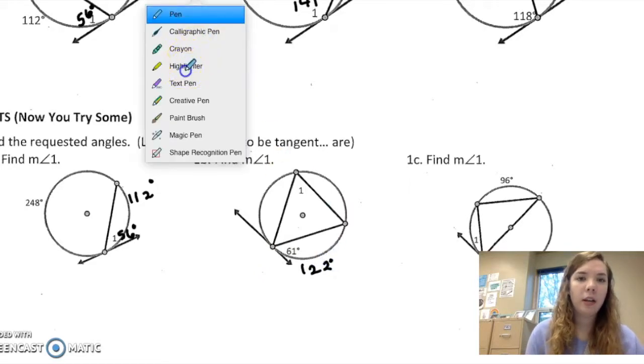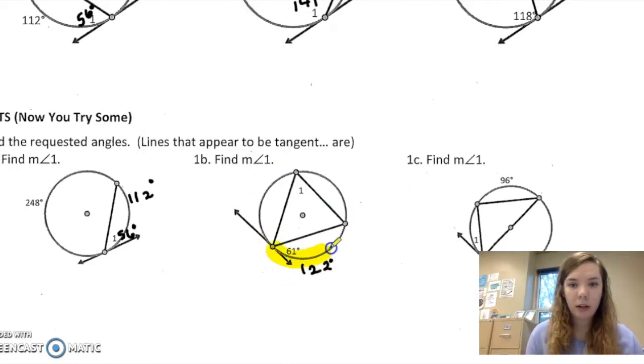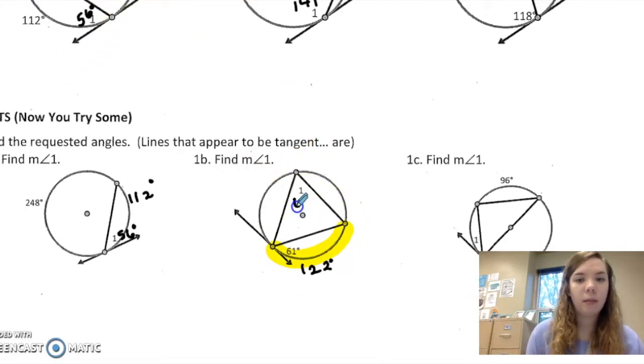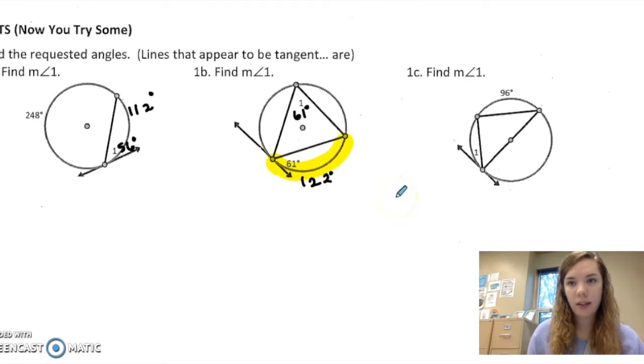Let me go ahead and highlight so you can really see what I'm talking about here. This piece is 122. And then since that's the endpoints of this inscribed angle, angle 1 is half of that, or 61 again.